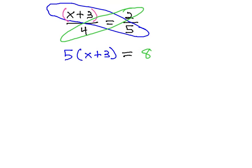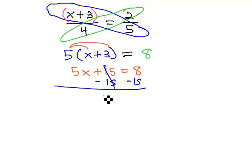This gives us an equation we can also quickly solve with just a few more steps. Distribute the 5 through the parentheses to get 5x plus 15 equals 8, and then solve the resulting two-step equation. Subtract 15 from both sides to get 5x equals negative 7.